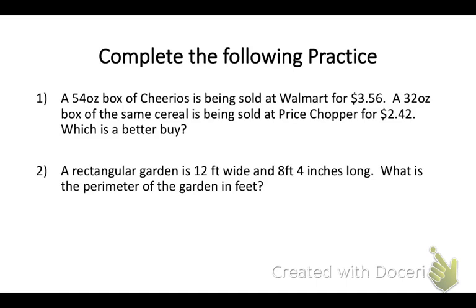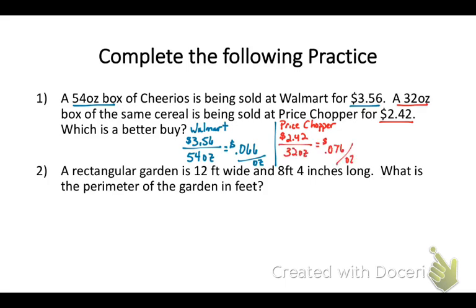Now let's do some practice problems. We're in the notes packet. A 54 ounce box of Cheerios is sold at Walmart for $3.56, and a 32 ounce box of the same cereal is sold at Price Chopper for $2.42. Which is the better buy? You might just want to grab the one at Price Chopper because it's less, but if we know how much money per ounce, we can see which is the better buy. Let's look at the cereal from Walmart. Take your dollars and divide it by your ounces. We get 0.066, so about 7 cents, a little less than 7 cents an ounce. Then let's look at the cereal from Price Chopper. That's $2.42 for 32 ounces, which is more. So actually the better buy is the bigger box of cereal at Walmart.